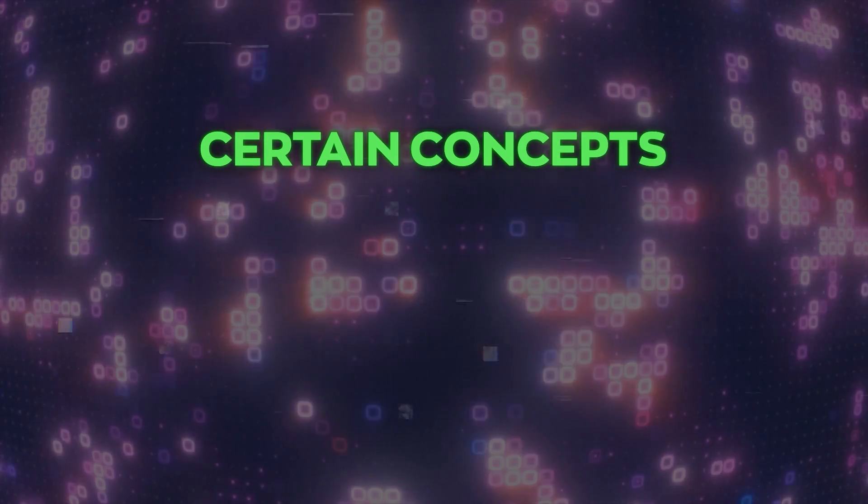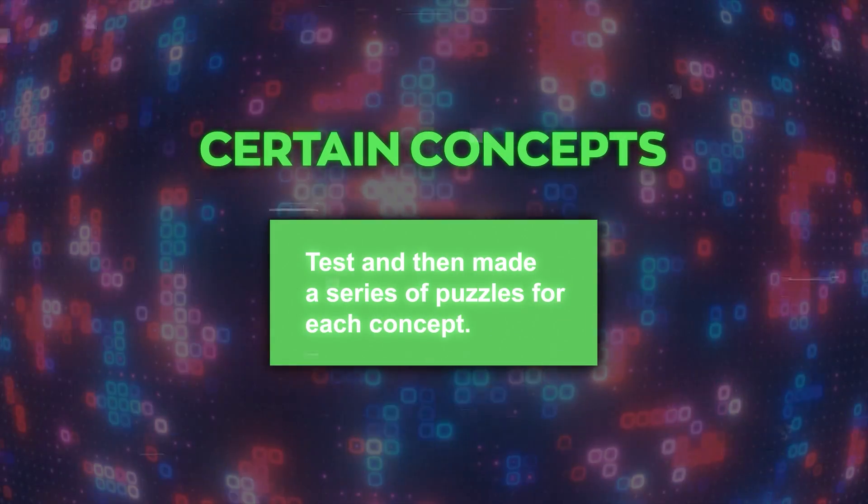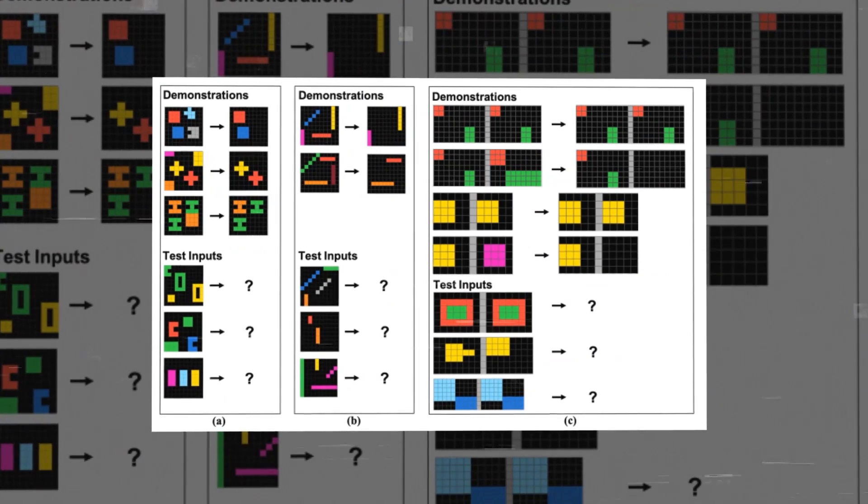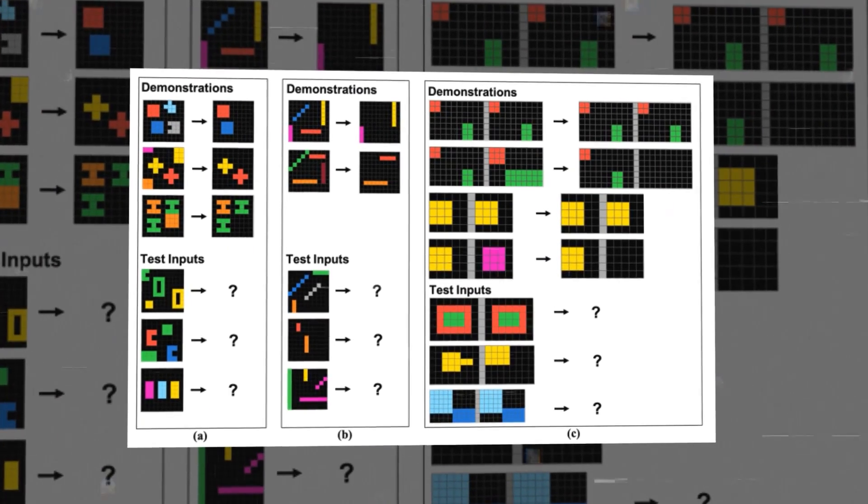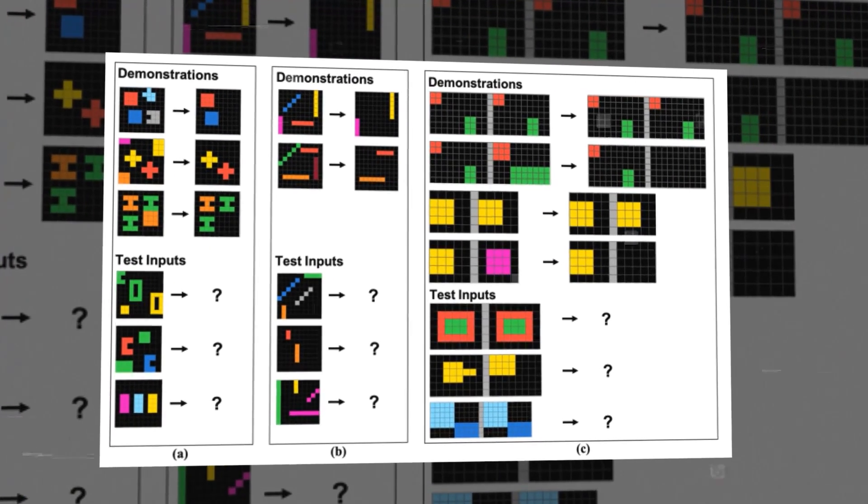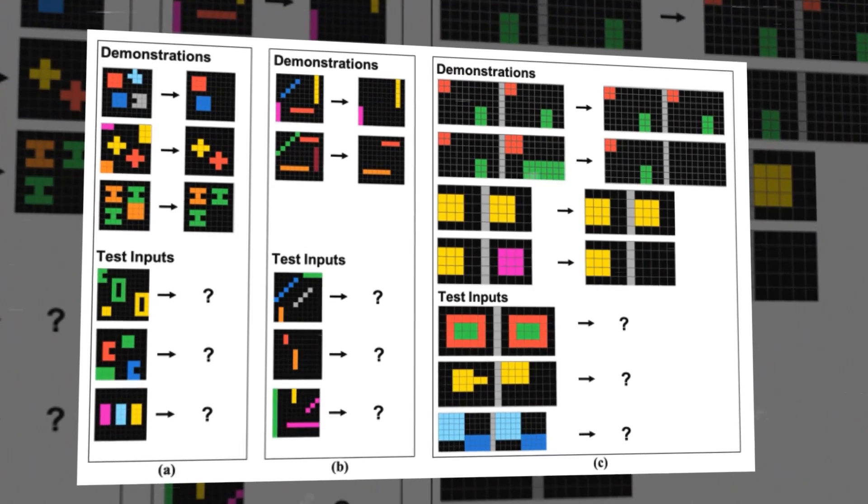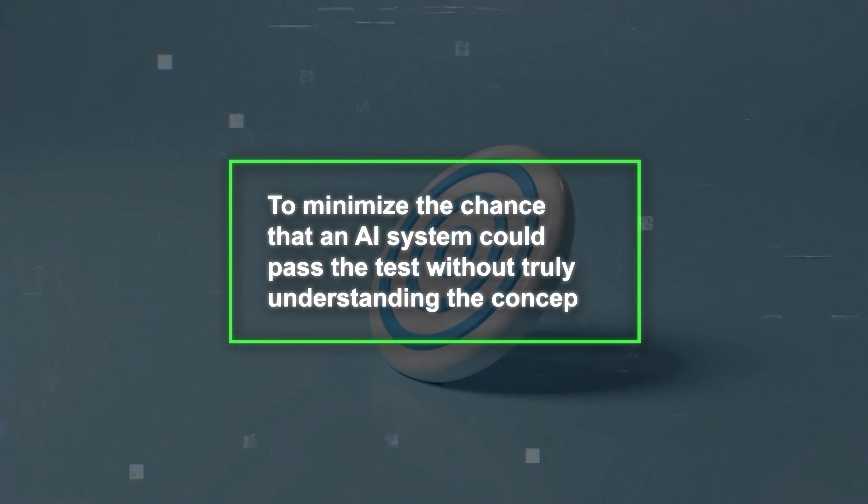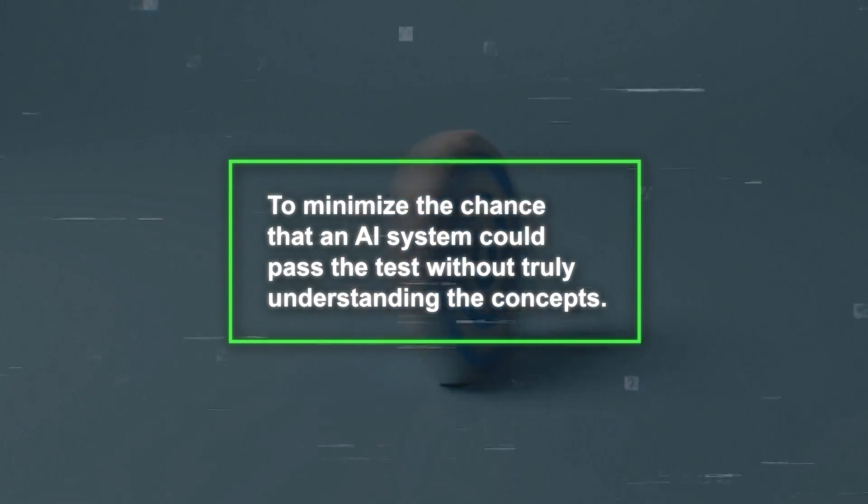Second, the team decided on certain concepts to test and then made a series of puzzles for each concept. For example, to test the concept of sameness, one puzzle asks the solver to keep objects in the pattern that are the same shape, while another puzzle asks them to keep objects that are aligned along the same axis. The goal of this approach was to minimize the chance that an AI system could pass the test without truly understanding the concepts.